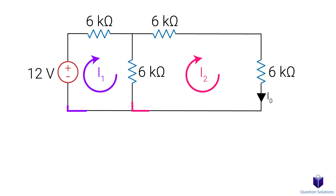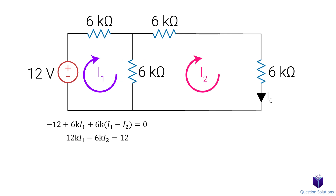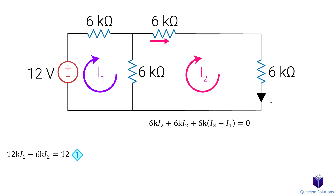We can pick both mesh currents to be clockwise. Let's write our first mesh equation for current I1. We have the 12V source, we enter the negative terminal, so it's negative 12V. Then we have 6k times the mesh current I1. And lastly, we have two mesh currents in this branch. Since we are writing our mesh current for I1, we get I1 minus I2, since I2 is flowing in the opposite direction to I1. Let's simplify — that's our first equation. Now we can write one for the second mesh: 6k ohms times I2, and another 6k ohms times I2, and the shared mesh currents giving I2 minus I1. Let's simplify — that's our second equation.